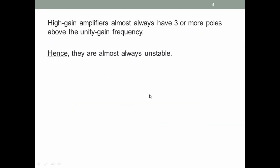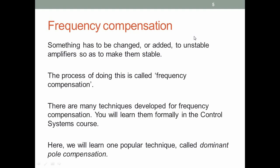High gain amplifiers almost always have three or more poles and therefore they are almost always unstable. Something has to be changed or added to an unstable amplifier to make it stable. Whatever that thing is — that process or method — is called frequency compensation.